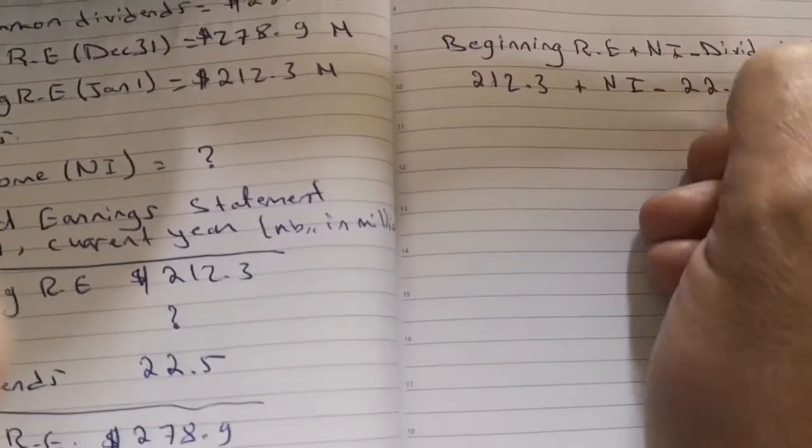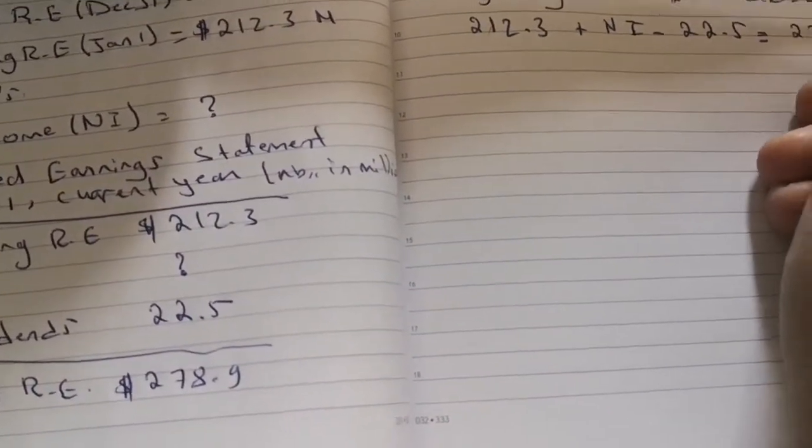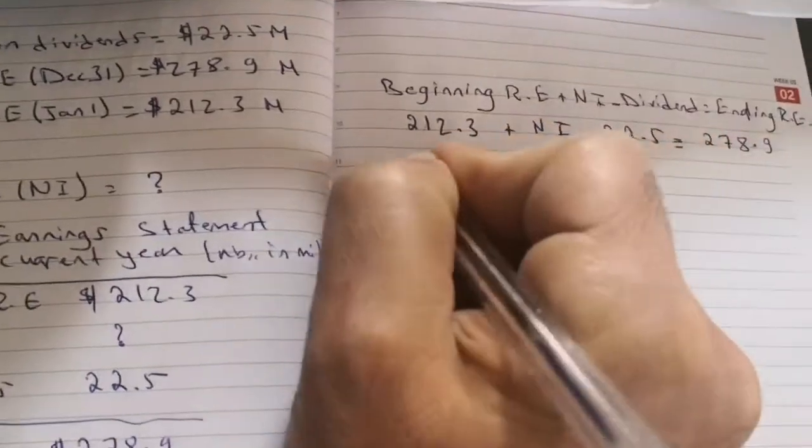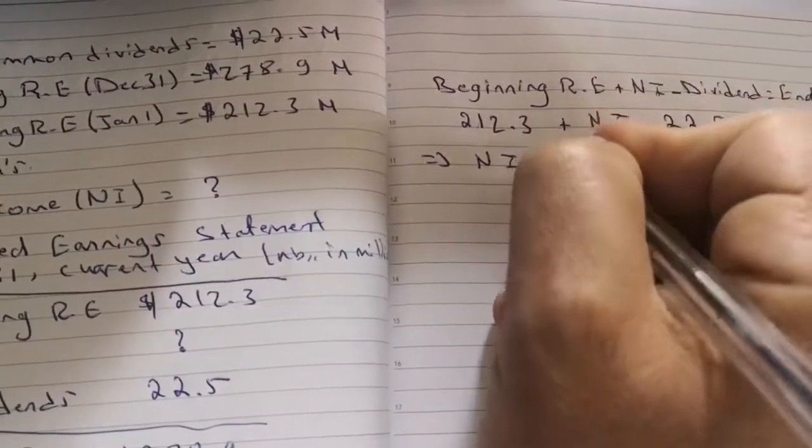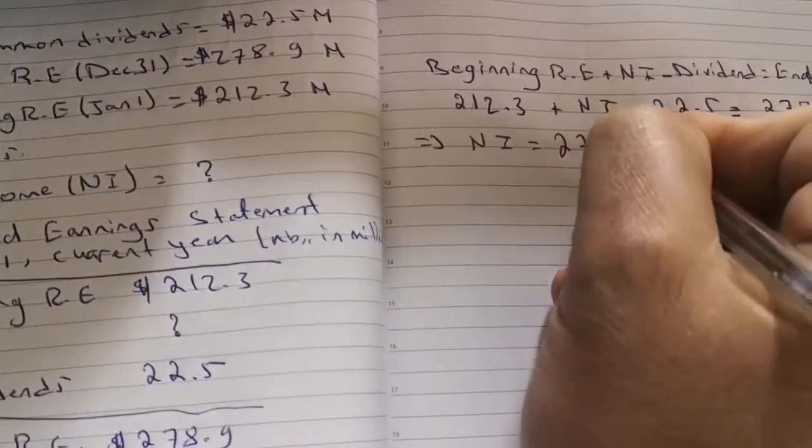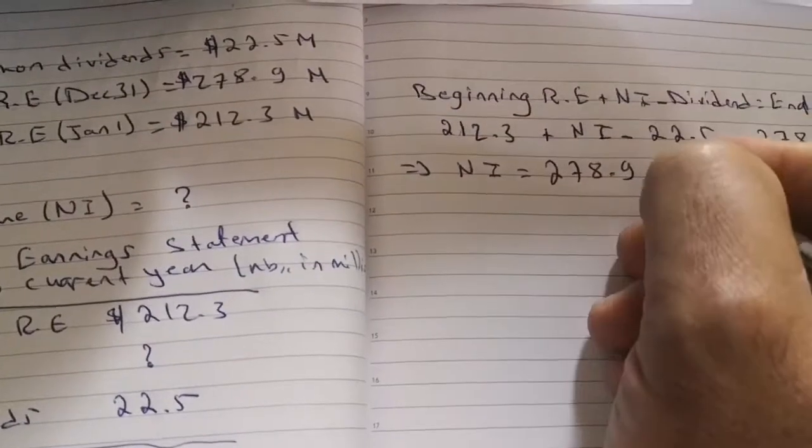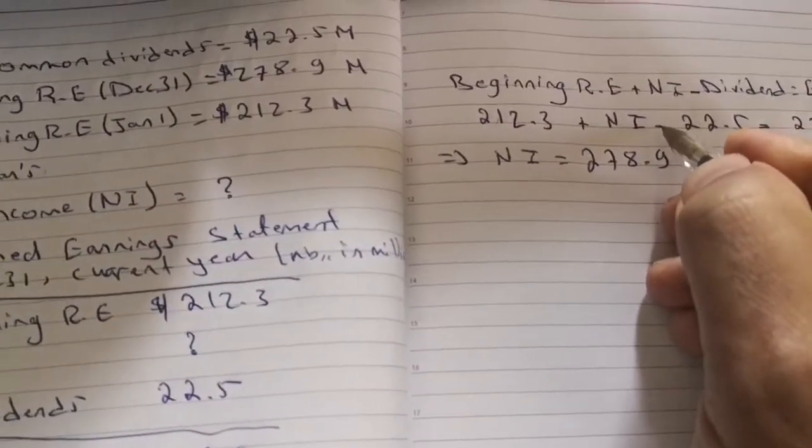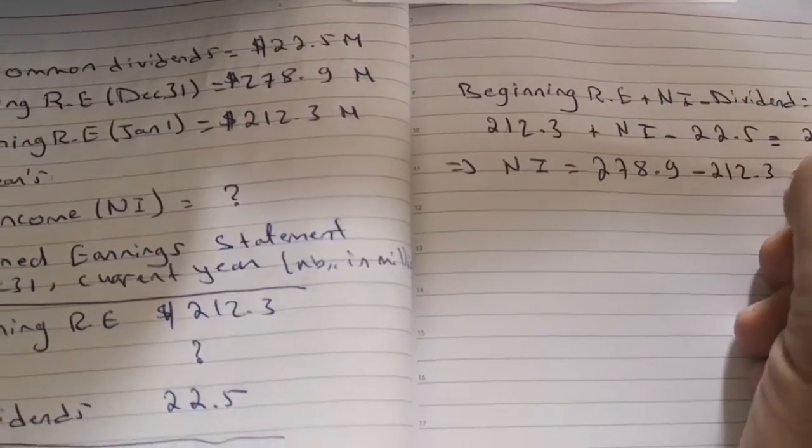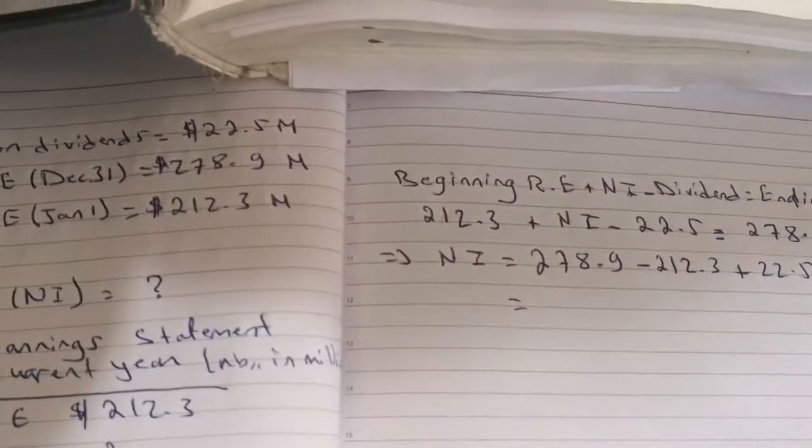This implies that net income equal $278.9 - this number has a positive sign, move it to the next side its sign will become negative: $212.3. Dividends has a negative sign, move it to the next side it will become positive: $22.5. And the answer is $89.1 million.